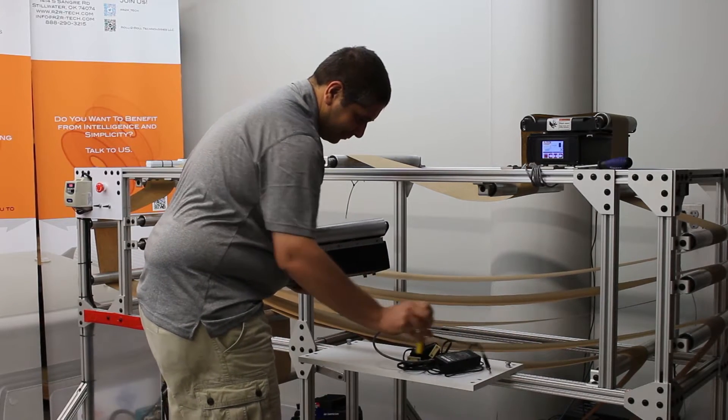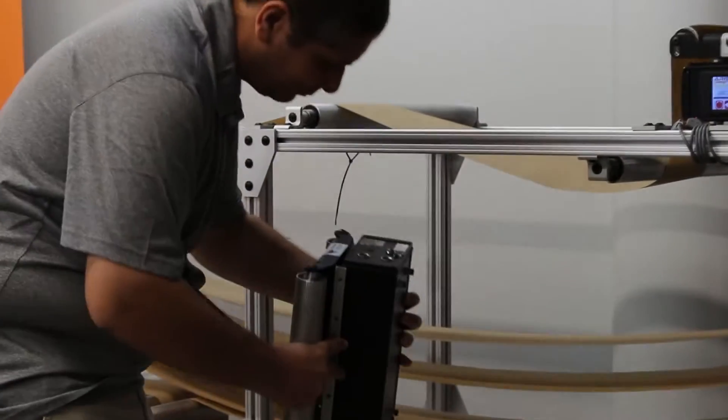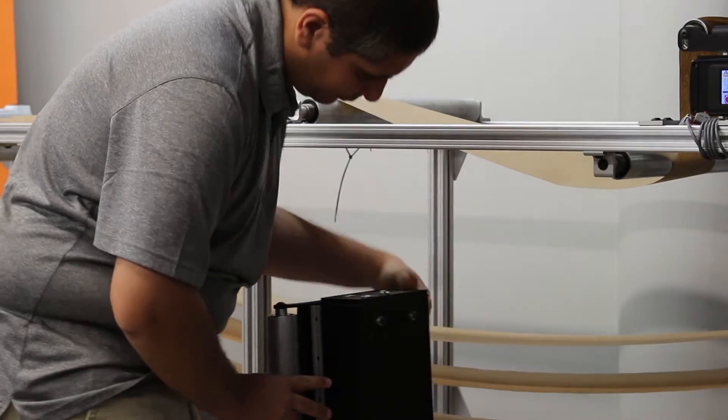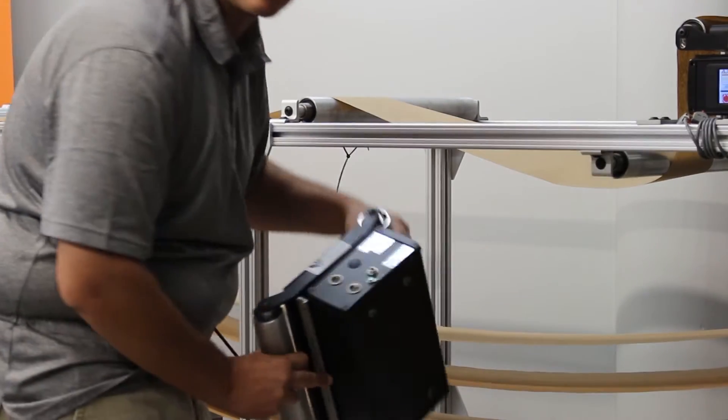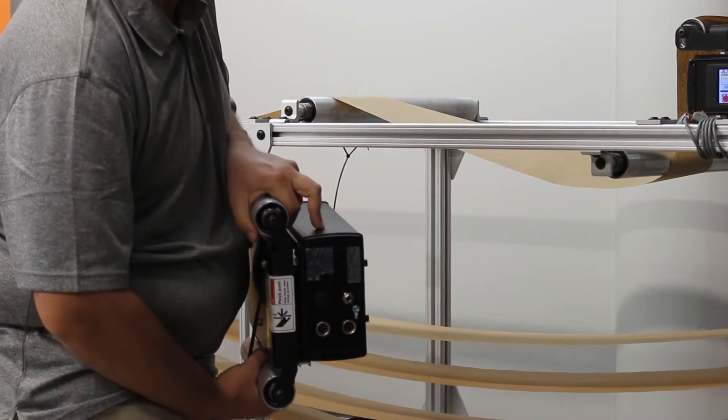All that is required is a single allen wrench tool to fasten the web guide to your machine frame using the mounting holes at the bottom of the web guide. We even provide the 6mm mounting screws with spacers to make it really quick and easy for you.